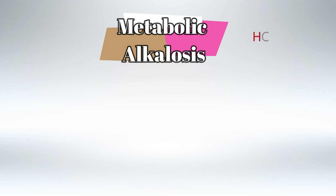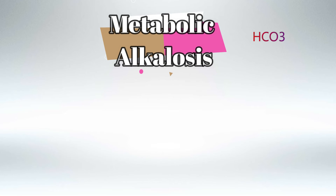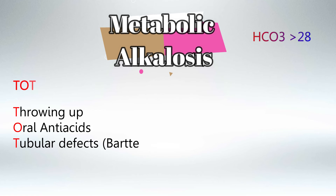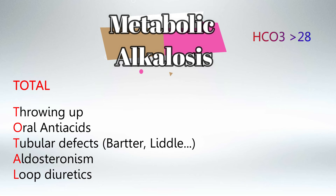Metabolic alkalosis is defined as bicarbonate more than 28. Bicarbonate is an alkalotic substance, so the more we have of it, the more alkalotic the blood will become. To remember the cases that present with metabolic alkalosis, remember the mnemonic TOTAL: T for throw up, O for oral antacids, the other T for tubular defects, A for aldosteronism, and L for loop diuretics.